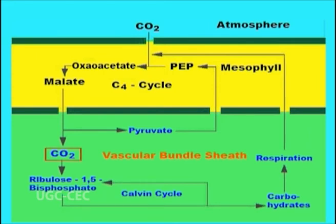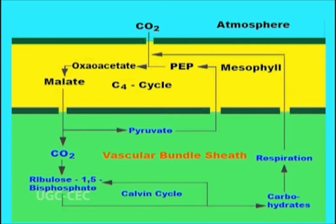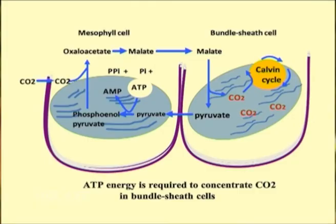Here, carbon dioxide is removed from the malate and combined with RuBP by rubisco in the usual way, and the Calvin cycle proceeds exactly as in a C3 plant. The carbon dioxide concentrations in the bundle sheath cells are approximately 10 to 20 times higher than the concentration in the mesophyll cells.